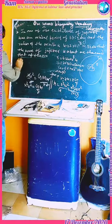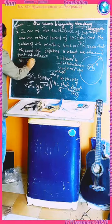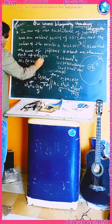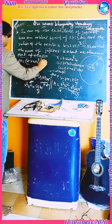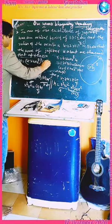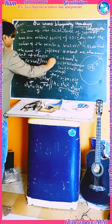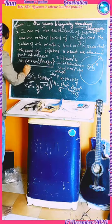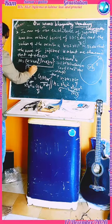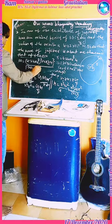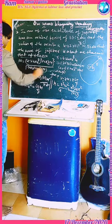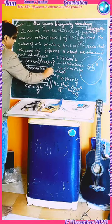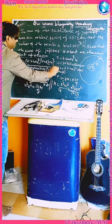That is, M is equal to (4.22 into 10 to the power of 8) cubed into 4 into pi (3.14) whole square, divided by (1.769 into 24 into 3600) whole square into 6.67 into 10 to the power of minus 11.